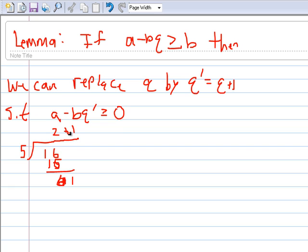To prove this, we write A minus BQ prime equals A minus B times Q plus 1 which equals A minus BQ minus B. And we already know that A minus BQ is greater than or equal to B. So if you subtract a B here and you subtract a B here this will get you zero, so this will get you greater than or equal to zero.